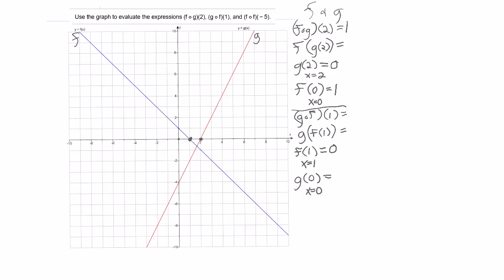So I start at x equals 0, and I go down to here, to where g is negative 4. So the answer is negative 4. So g of f of 1 equals negative 4.